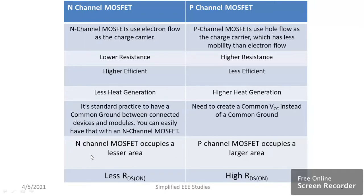Regarding size, n-channel MOSFET occupies a very small area, where p-channel MOSFET occupies a higher area. For the same complexity, p-channel MOSFET occupies a larger area — that is another setback regarding p-channel MOSFET.